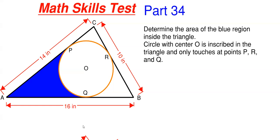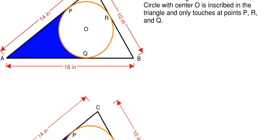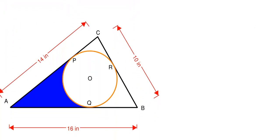In order to get this blue area, we need to know some information. We need to know the radius of this circle and we need to know the distances from A to Q and then A to P. So let's start working on that information.